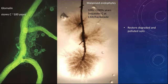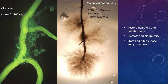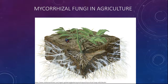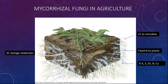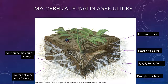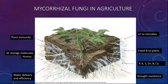This can restore degraded and polluted soils, increase biomass and biodiversity, store and filter surface and groundwater, and offset up to one third of our annual emissions into soils. Mycorrhizal fungi in agriculture feed liquid carbon to microbes, return nitrogen fixed through bacteria back into plants, feed all minerals back into the system, store carbon in molecules such as humus, and provide water delivery efficiency, drought tolerance and plant immunity — with no pesticides and no requirement for any fertilizers. Nature has been doing this for millions of years.